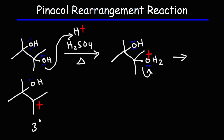However, we can form a more stable carbocation in this example due to the presence of the oxygen, and so we're going to get a rearrangement reaction. Now, this carbon here has four bonds and there are no hydrogen atoms on that carbon, so we can't get a hydride shift. However, what we can get is a methyl shift.